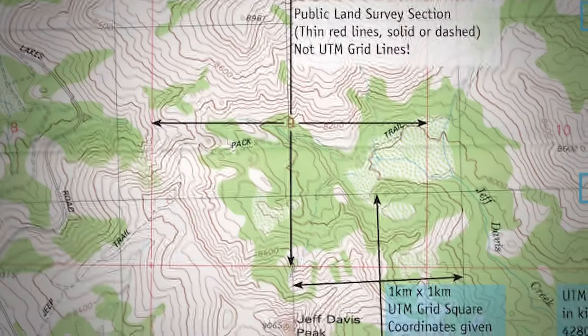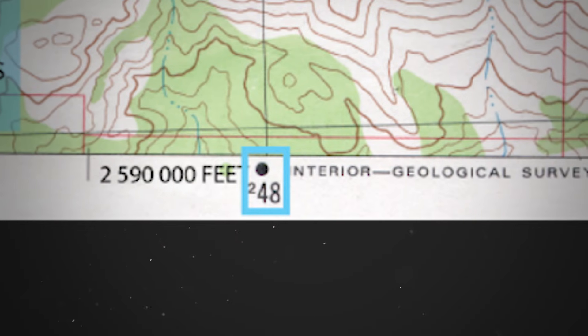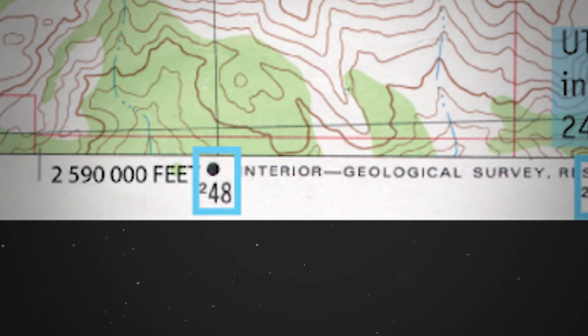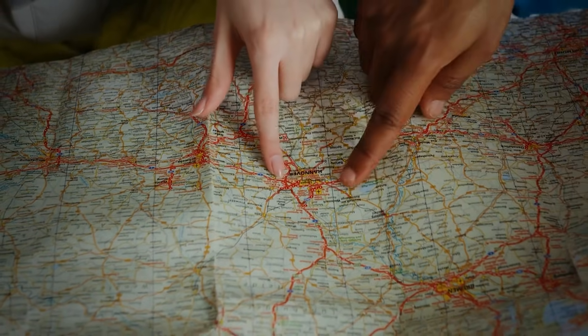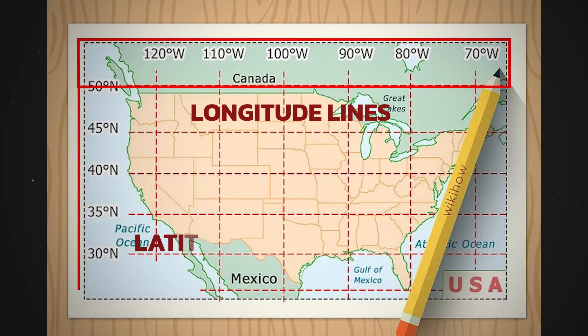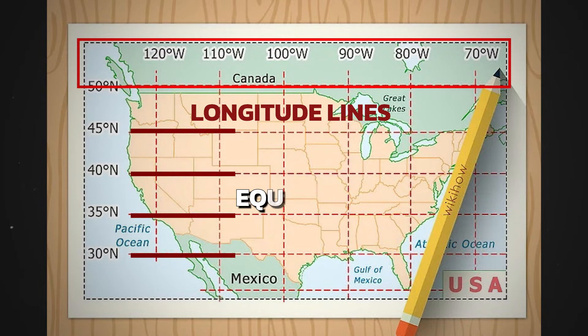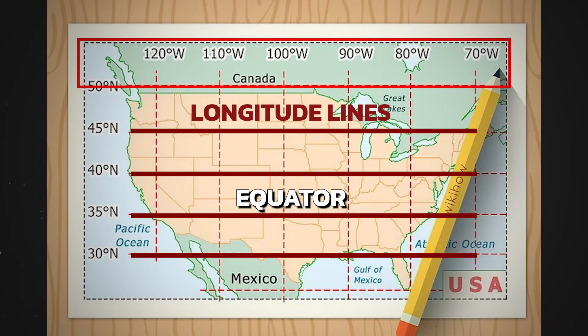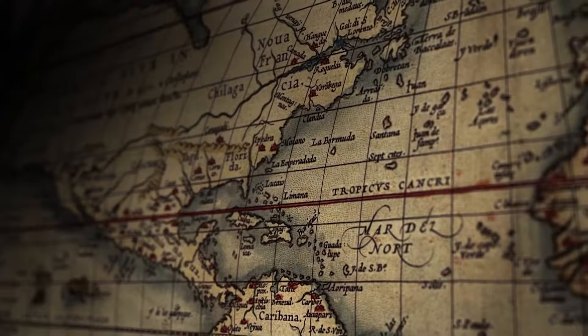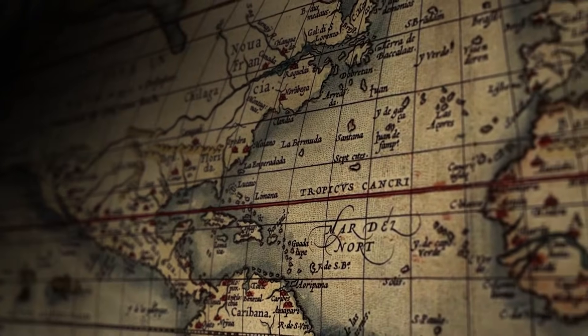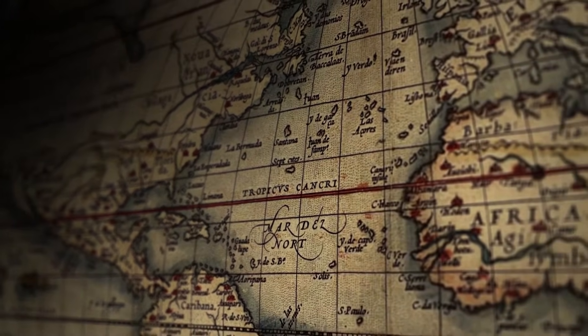To gain insight into the grid lines, you can look at the grid reference at the bottom of the map, which provides information and can help with identifying different locations on the map. Topographic maps may also use longitude and latitude lines. Latitude lines run parallel to the equator, while longitude lines run from pole to pole, and these lines can help determine the absolute location of a point on the map.